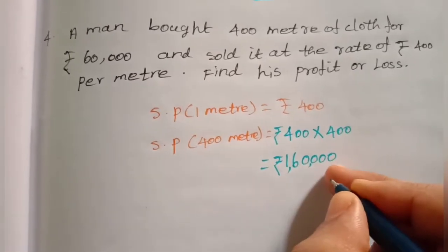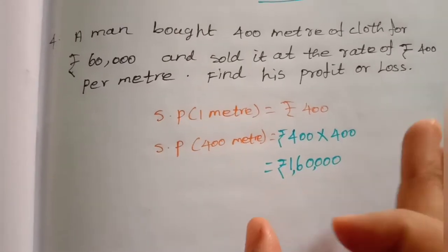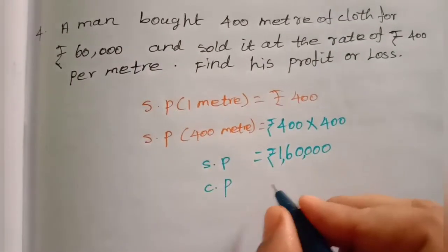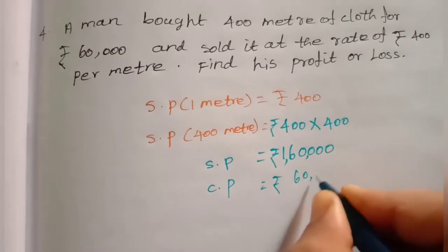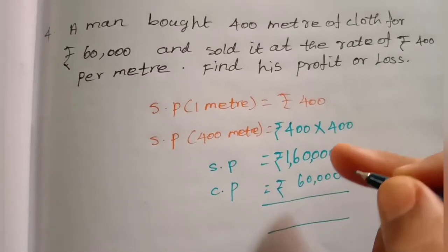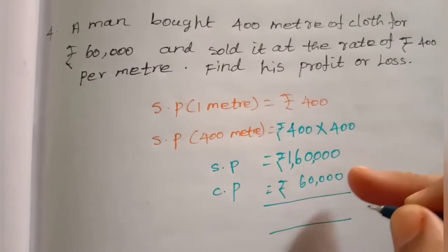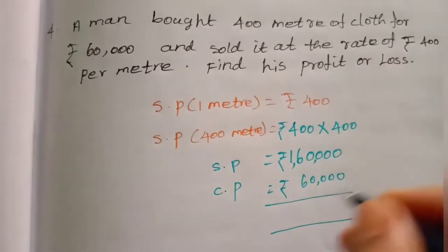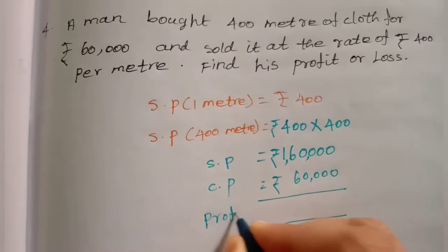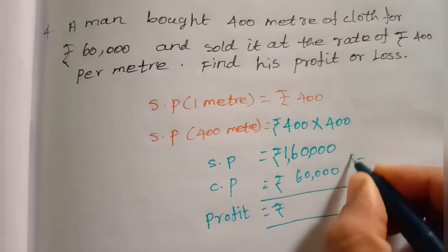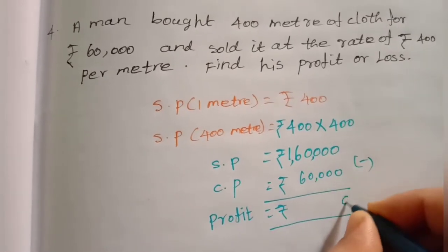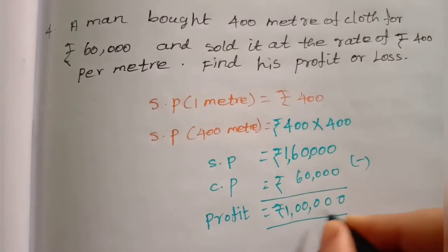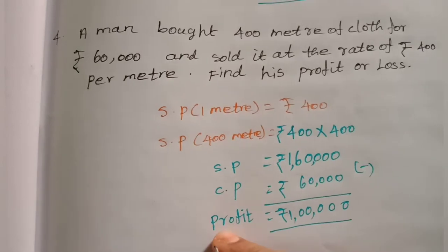Selling price is 1,60,000 rupees. Cost price is 60,000 rupees. Comparing: selling price 1,60,000 is greater than cost price 60,000. So there is a profit. Profit equals selling price minus cost price: 1,60,000 minus 60,000 equals 1,00,000 rupees profit.